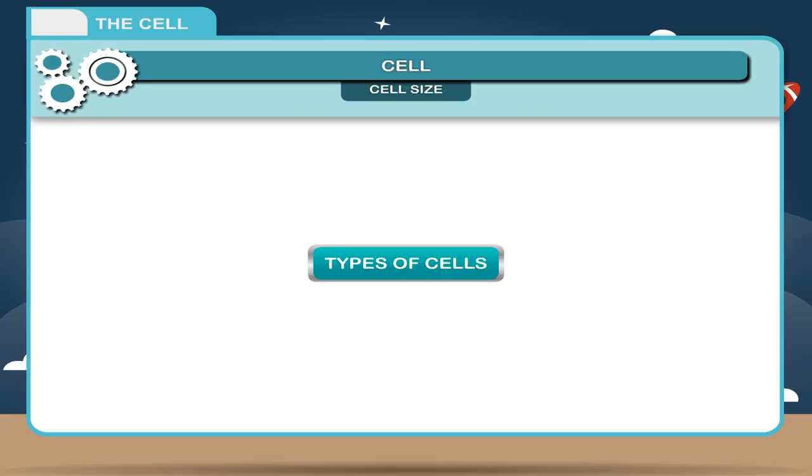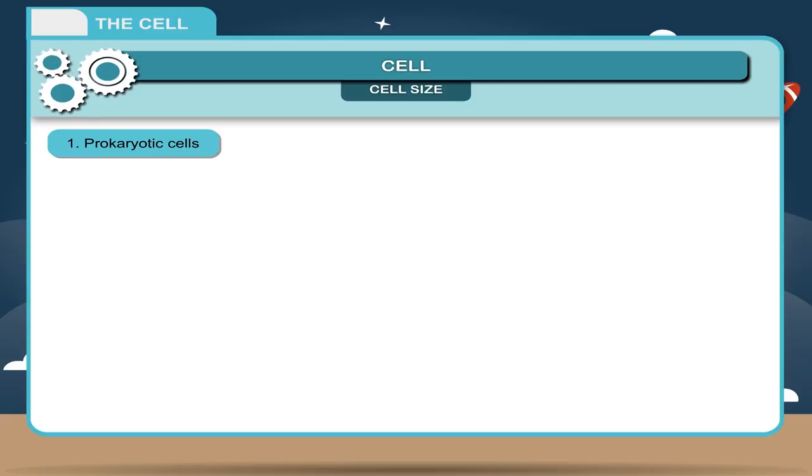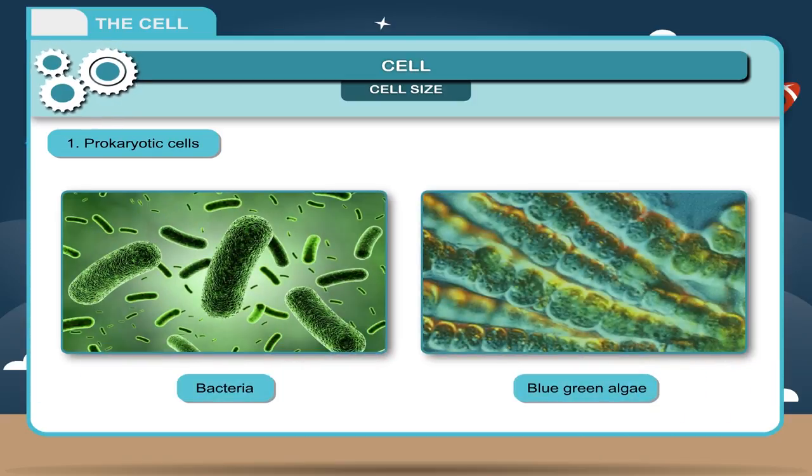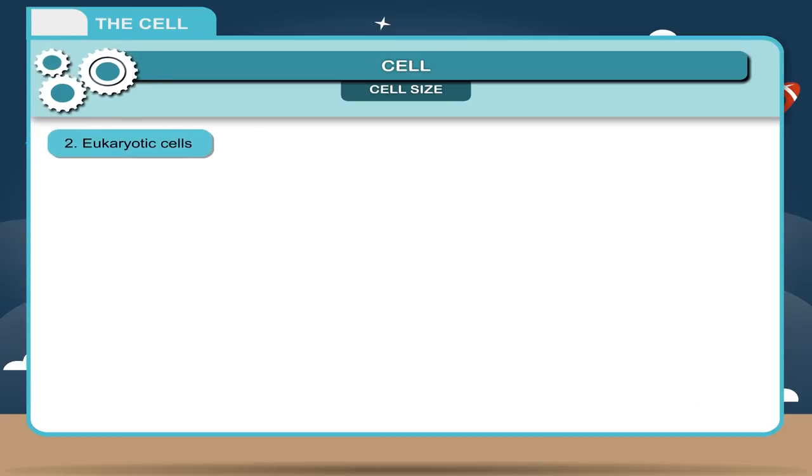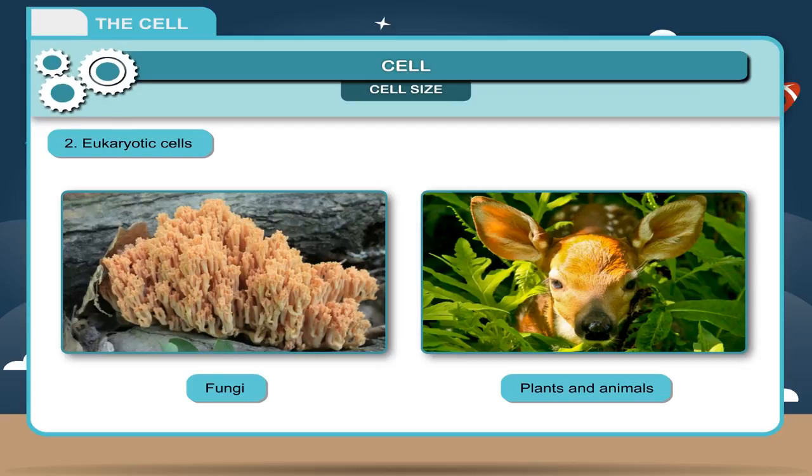Types of cells. Cells are of two types. One, prokaryotic cells. These are the most primitive cells. They lack true nucleus and nuclear membrane. Examples: bacteria, blue-green algae. Two, eukaryotic cells. These are the cells with true nucleus. Nucleus is always enclosed by nuclear membrane. Examples: fungi, plants, and animals.